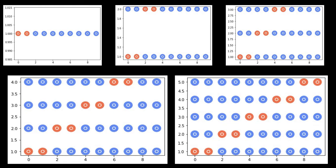Now if we have 10 points in our dataset — and I will be executing everything via Python matplotlib — if I have 10 points and I am using five folds, then in each fold I have two elements. So in the very first iteration, the first two points will be my test dataset and the rest will be my train dataset. In the next iteration, points three and four will be my test dataset. This will continue until the last two points become the test dataset.